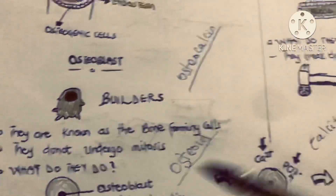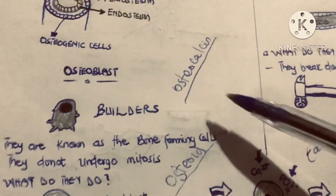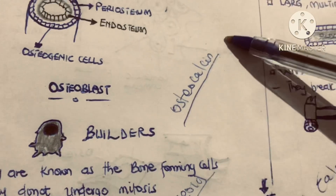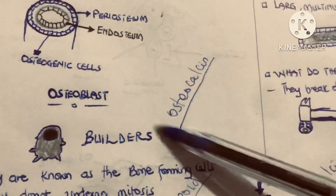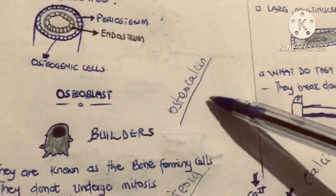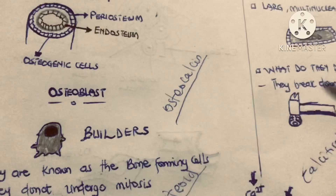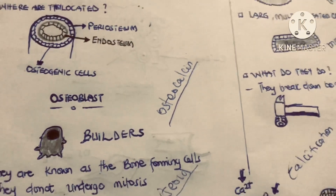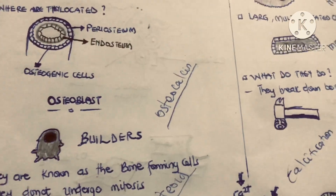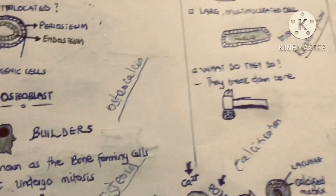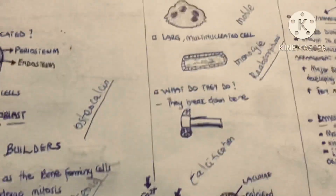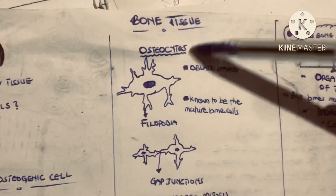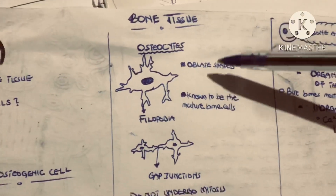One more thing about osteoblasts: they also secrete a hormone called osteocalcin. This osteocalcin stimulates the pancreas to release insulin, which helps in glucose metabolism.